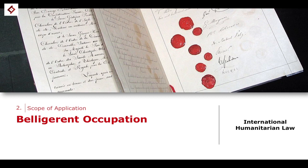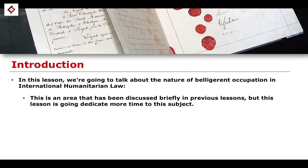What is important is we've looked at belligerent occupation already, or at least mentioned it briefly in previous lessons, because it's a very important aspect of international humanitarian law that tangentially relates to the concept of international armed conflicts, since one of the requirements for belligerent occupation is this idea of a conflict that is international in character.